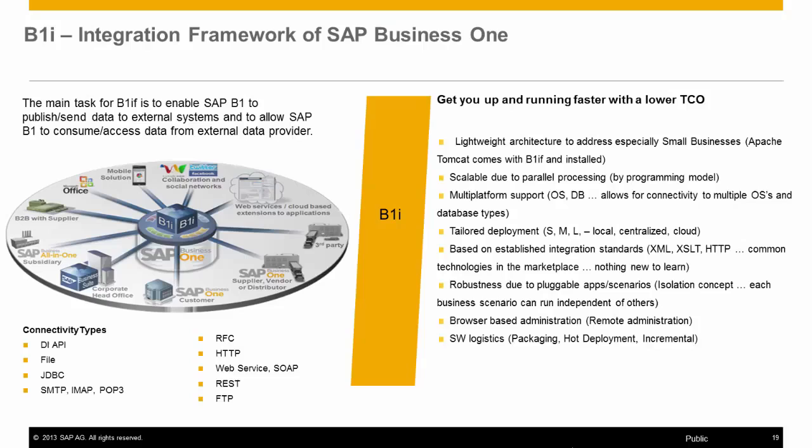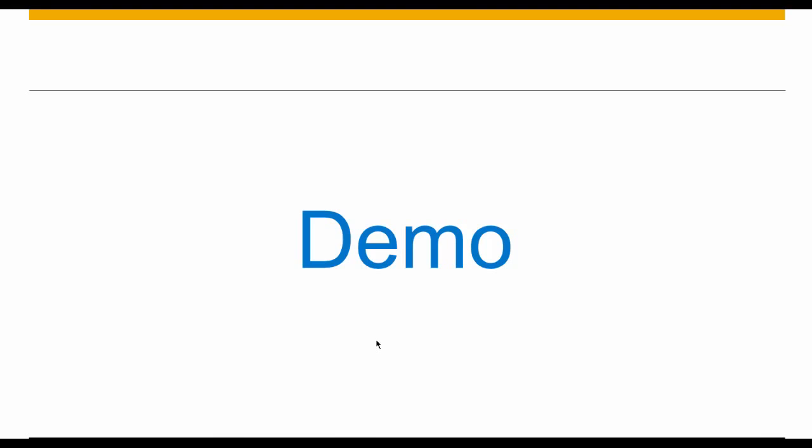The main task for the SAP Business One Integration Framework is to enable SAP Business One to publish and send data to SAP systems as well as external systems, and to consume and access data from any external data provider. You can see the many connectivity types available, such as flat file, web services, JDBC, FTP, and many more. These are built-in, ready-to-use connectivity types available once the solution is installed.